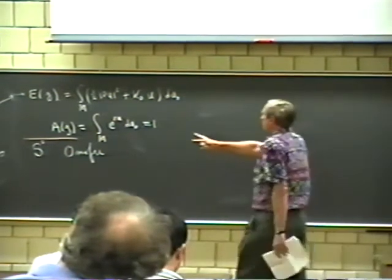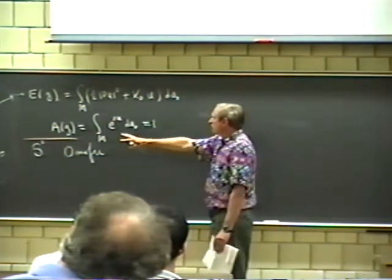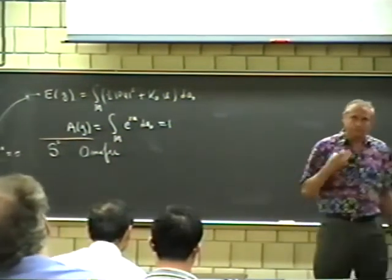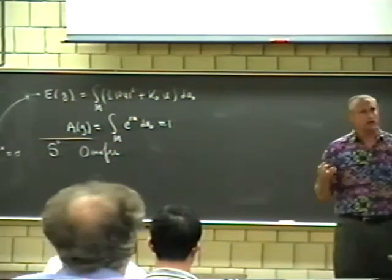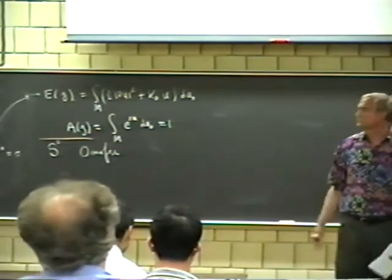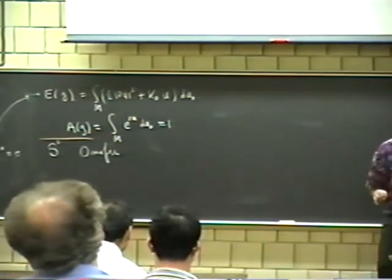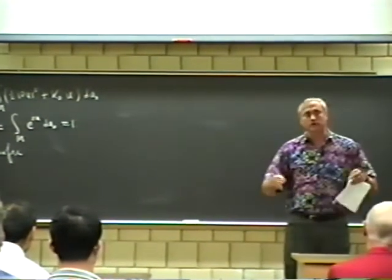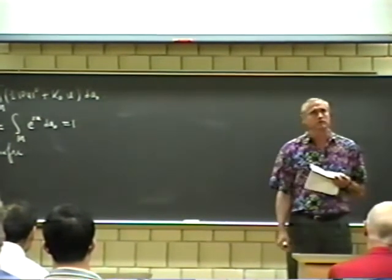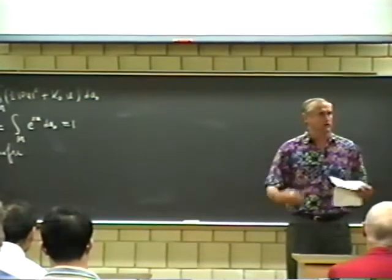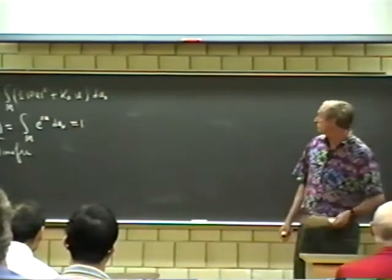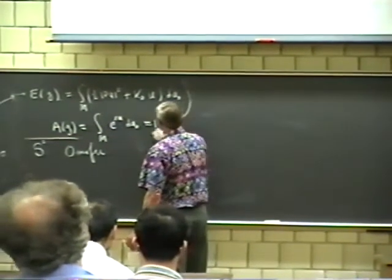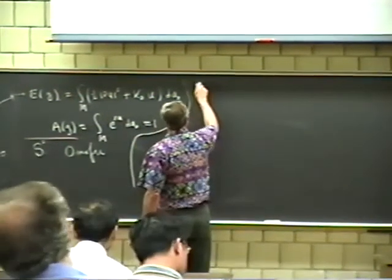One reason for interpreting constant curvature metrics variationally is it gives an approach to constructing them. It's also fairly easy in the surface case to use this variational characterization to construct constant curvature metrics using standard arguments. What I'm going to talk about is an attempt to do something similar in three dimensions.